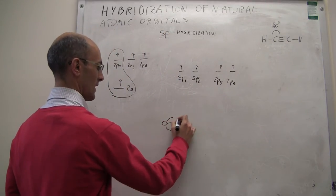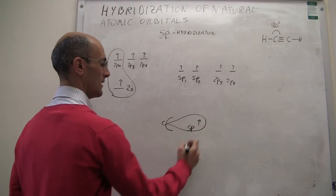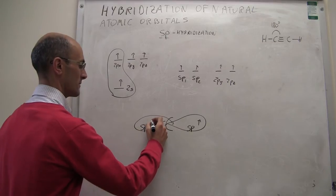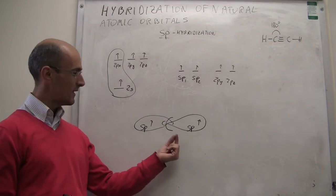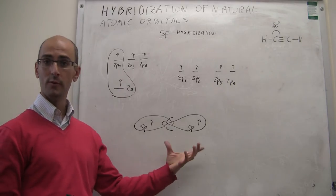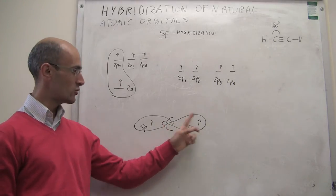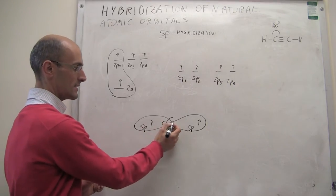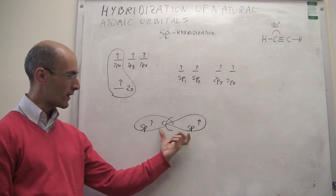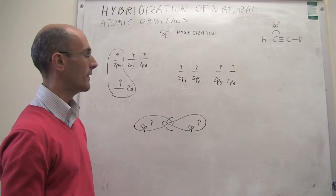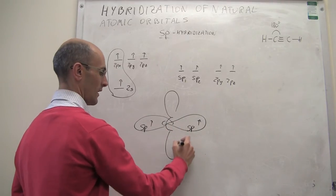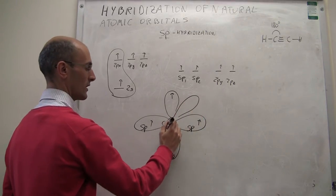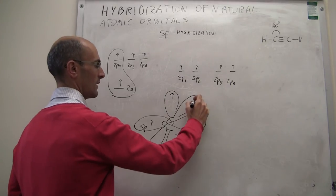That carbon atom is going to look like this. This is one of the sp hybrid orbitals with one electron, and this is the second sp hybrid orbital, which also has one electron. Notice that these are not the same orbital — they are two independent orbitals, not two lobes of the same orbital as in the natural 2px or 2py. Each one can hold one electron. We still have the unhybridized orbitals: the 2py with one unpaired electron, and the 2pz coming in and out of the plane.